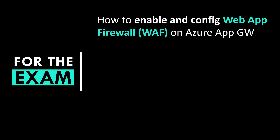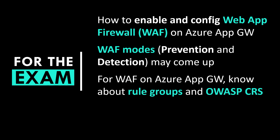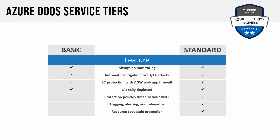For the exam, definitely know how to enable and configure a Web App Firewall on Azure App Gateway. Be familiar with the WAF prevention and detection modes, which could come up in a Web App Firewall question. Also know what rule groups and the OWASP core rule sets are about. Finally, learn what the standard tier of Azure DDoS delivers over the basic tier: protection policies tuned to your VNet, logging, alerting, telemetry, and resource cost scale protection.